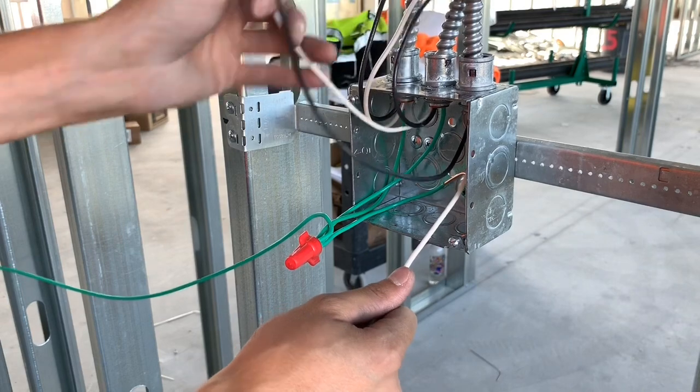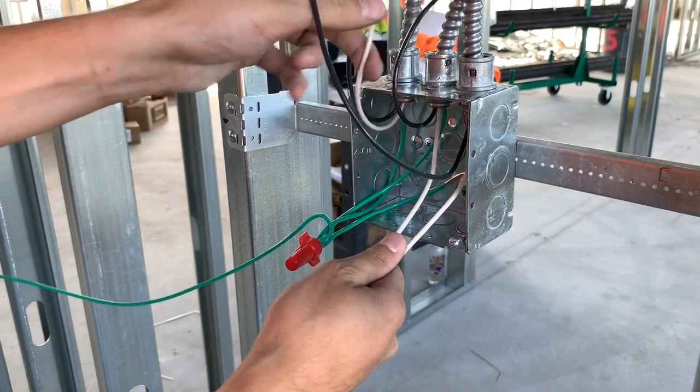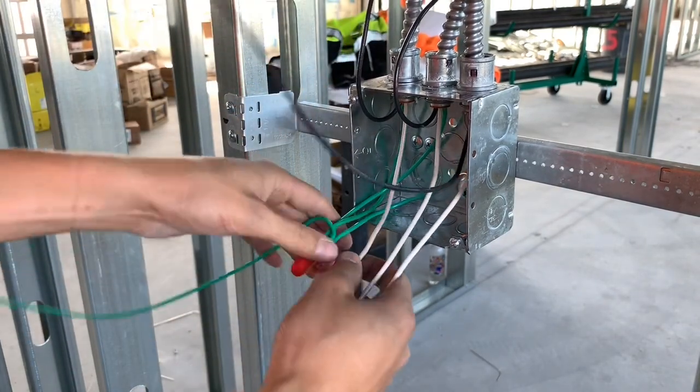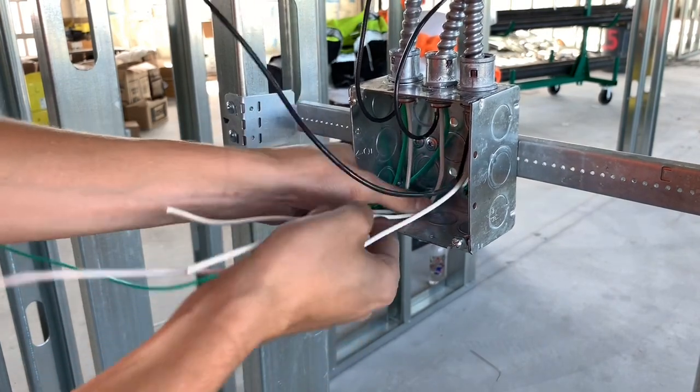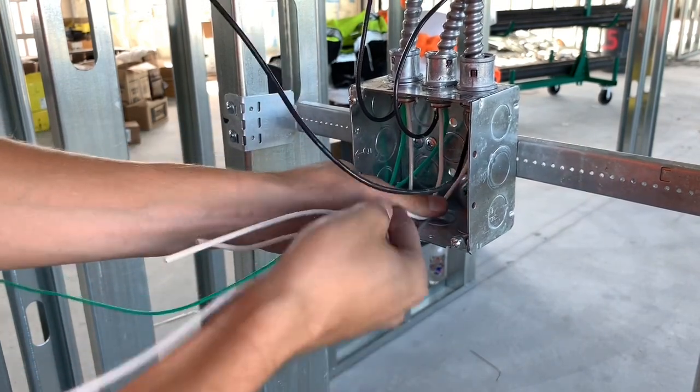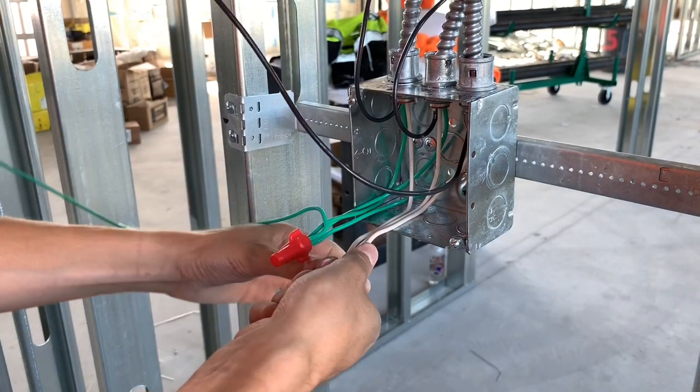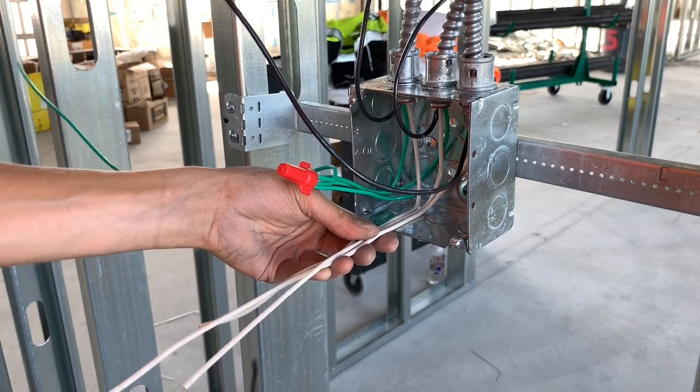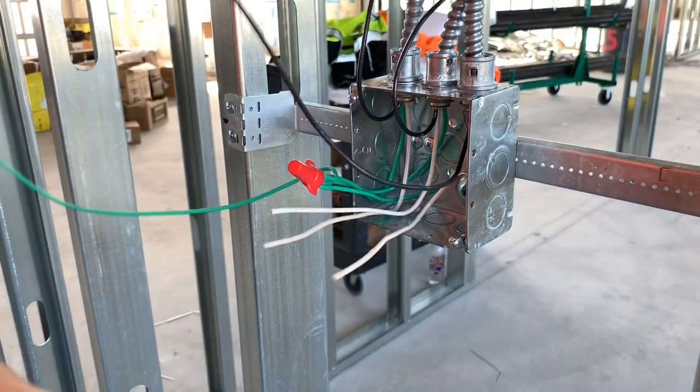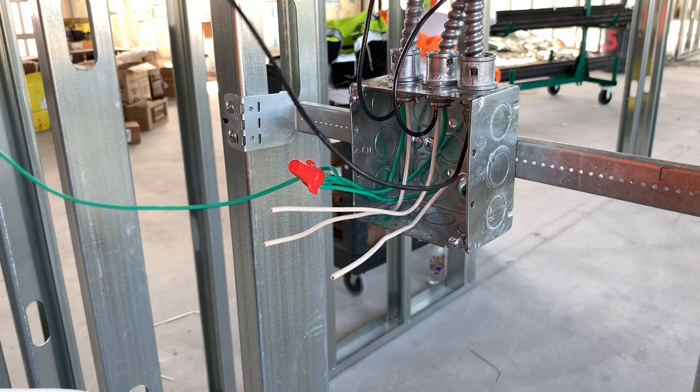So once you make up your grounds, all the neutrals tied together. In this case, they won't be pigtailed. If you're in a different application, like a bathroom or something, and you needed a neutral for one of the new types of switches, then you could pigtail one of them or whatever.